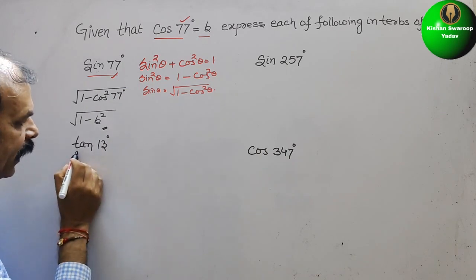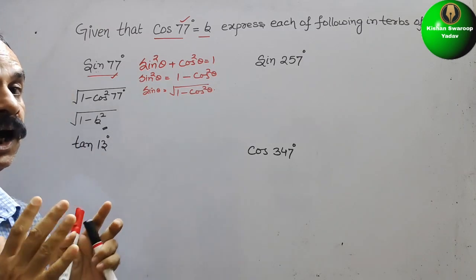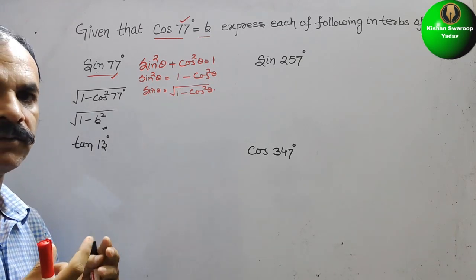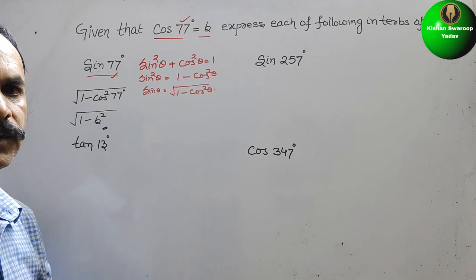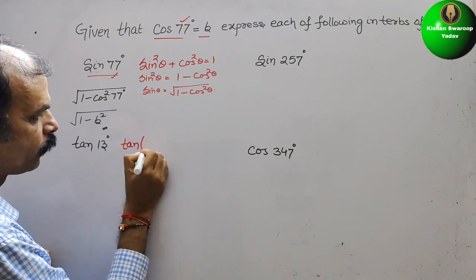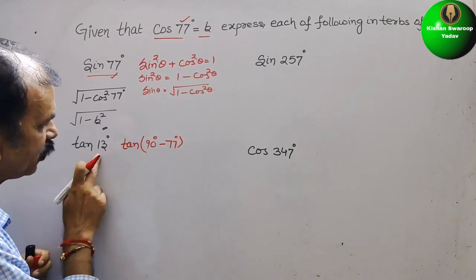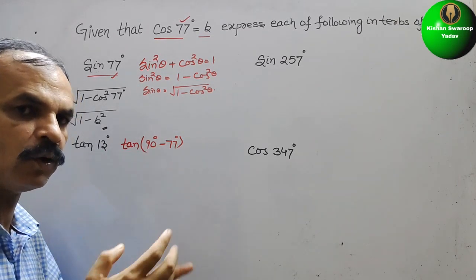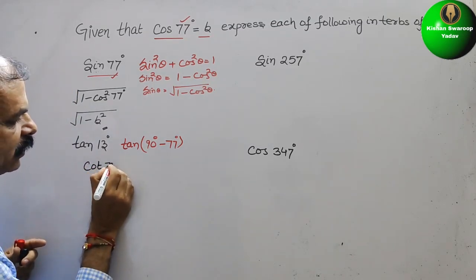Next: tan 13°. We have to convert 13° to 77°. By the complementary angle conversion, tan converts to cot. So we write tan 13° = tan(90° − 77°), which equals cot 77°.